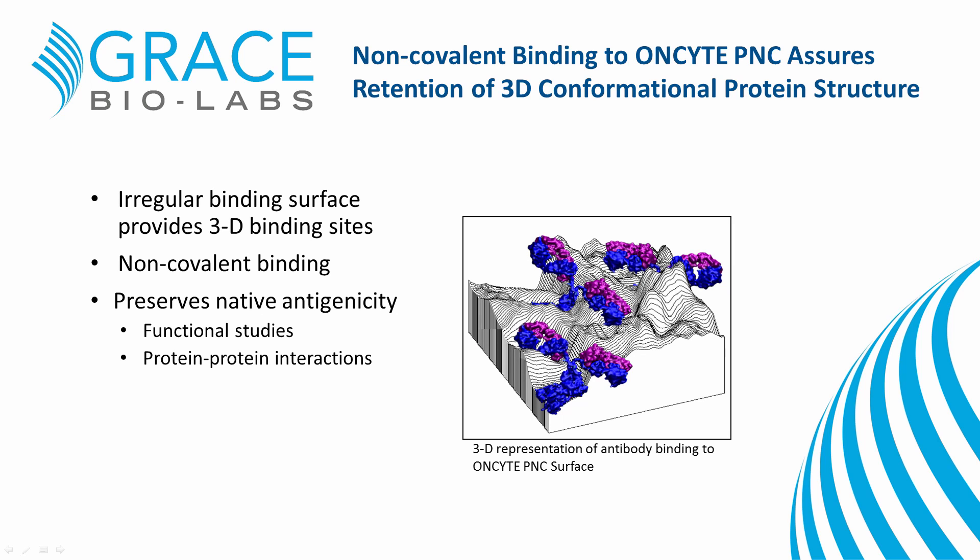More importantly, the surface of film slides is ideal for protein binding. It provides an irregular binding surface with many crevices and grooves where proteins can situate themselves, and the method by which it binds is non-covalent. Both of these characteristics provide an ideal environment for the preservation of a protein's three-dimensional tertiary structure and function.